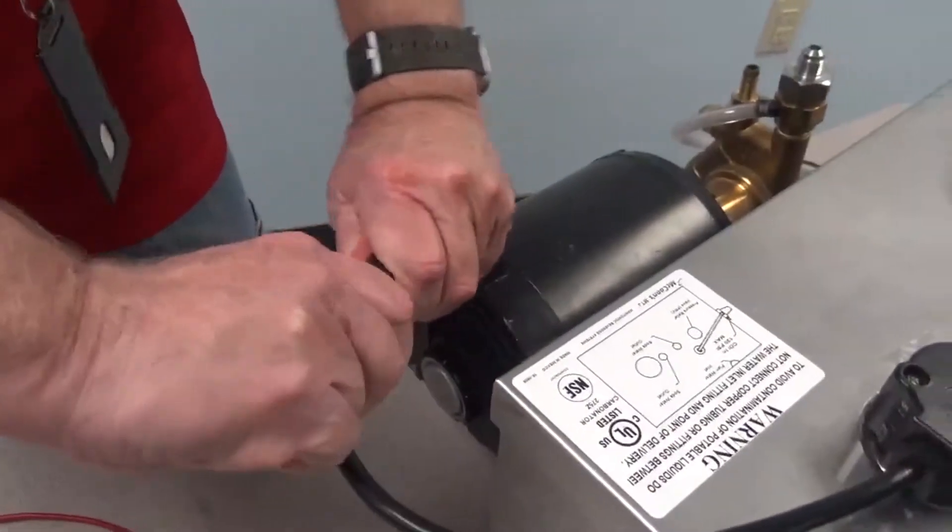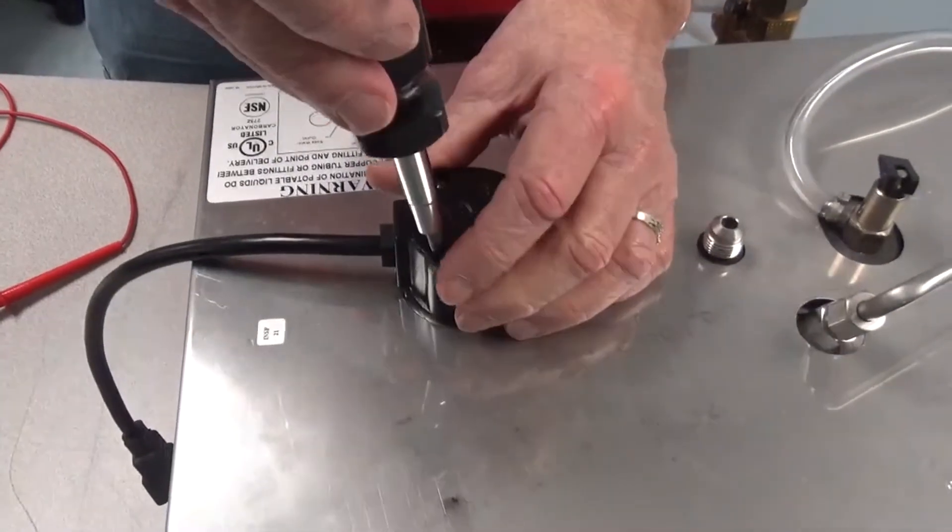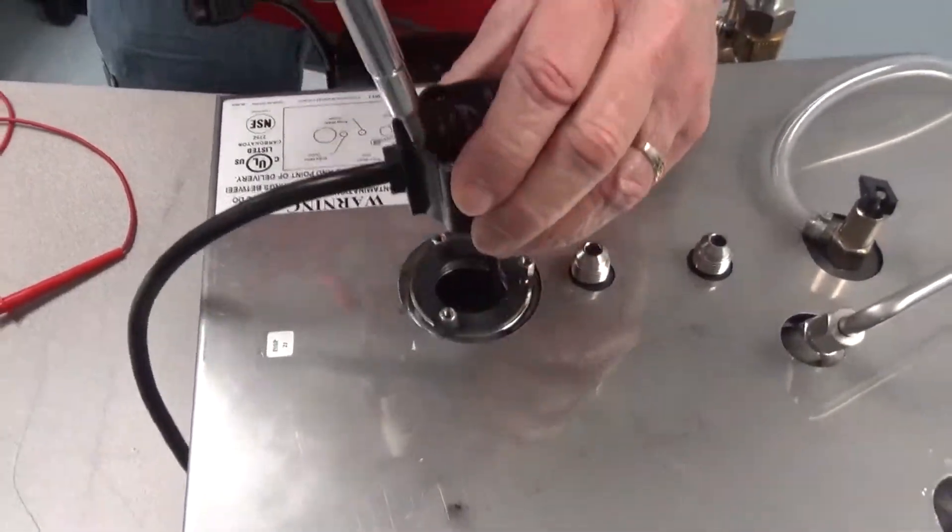Disconnect the probe harness from the connection that goes to the motor. Remove the three Phillips head screws that hold the probe in place and pull the probe up from the tank.